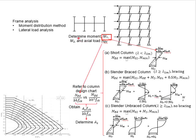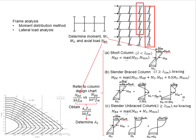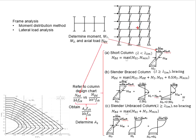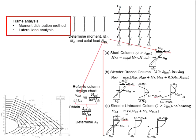From the analysis of the frame, you will obtain the moment acting on the columns as well as the axial force acting on the columns. This represents the typical moment diagram of the columns. For each column that you need to design, there will be two moments M1 and M2. The axial load acting on the columns is determined from the loads from the upper stories.